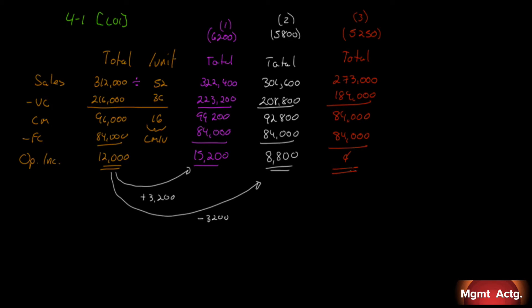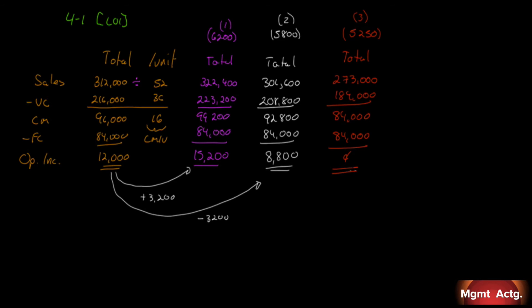That is Exercise 4.1. A note before you go: this question asked us to do a contribution format income statement for each option. We don't have to do it that way — we know how to work with the contribution margin per unit and the contribution margin ratio. We can just take the change and figure out what happens to operating profit. This was the long way around; as we get through the questions we'll do it the shorter way.